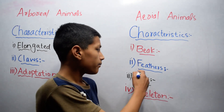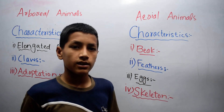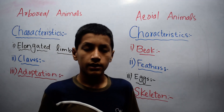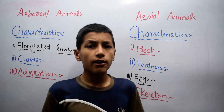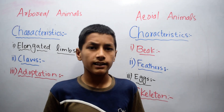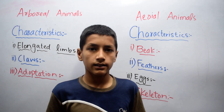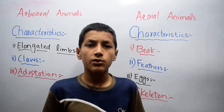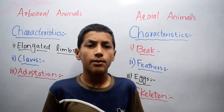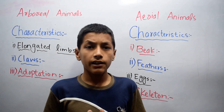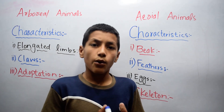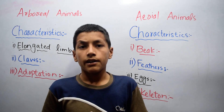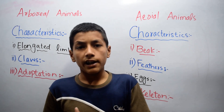The second characteristic is feathers. Aerial animals have feathers. Feathers help them to fly, and feathers also help them to protect from sunny, cloudy, rain, and wind conditions.